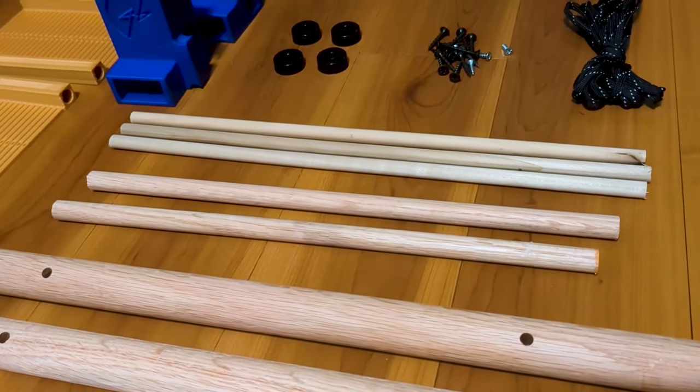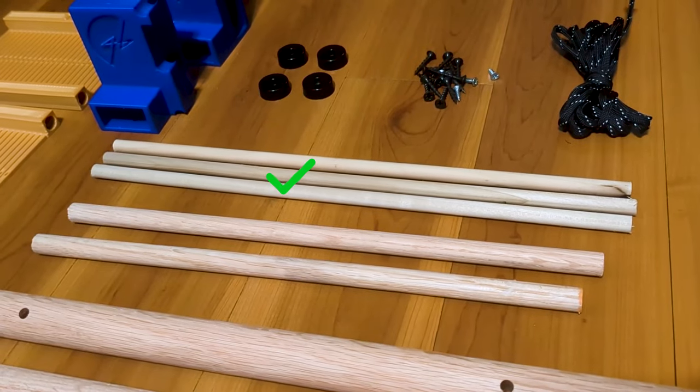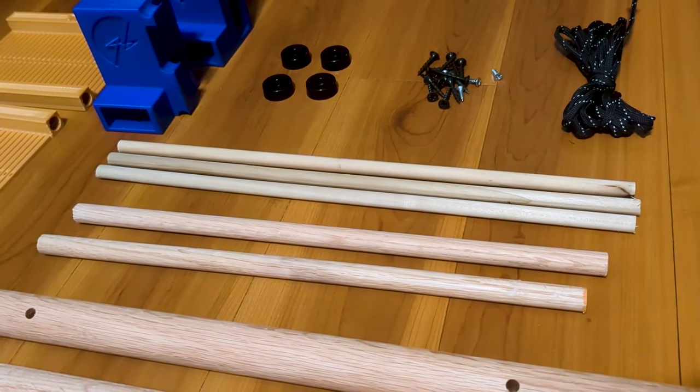We have the 1.5 inch dowels that are used for the tie up rods, and then we have these 3/8 inch dowels that are used to hold the heddle together as well as to make a shuttle.